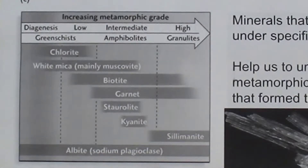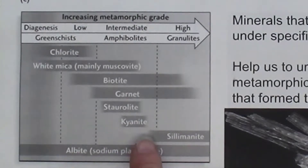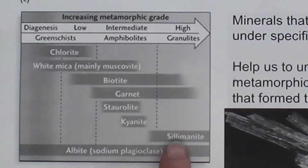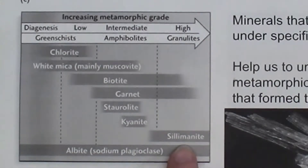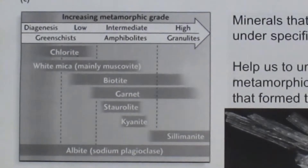Kyanite will form in a rock that's under intermediate grades of metamorphism. But if the temperature continues to increase over longer periods of time, kyanite will turn into sillimanite, which is a polymorph — meaning it's a mineral with the same elements present but a more compact crystalline structure.